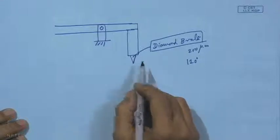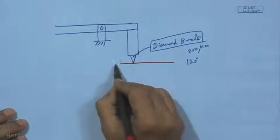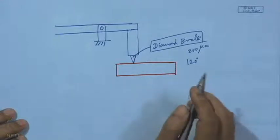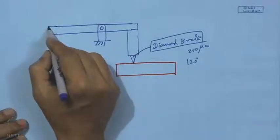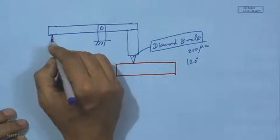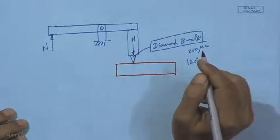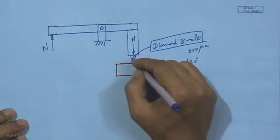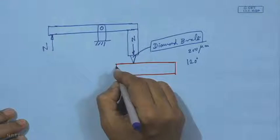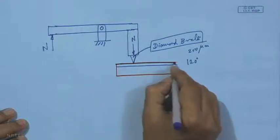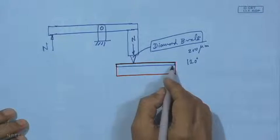In the scratch test apparatus, the coated sample is placed on the table. A normal load is applied, which is transmitted to the indenter through the arm. With this normal load, the indenter makes a deeper scratch into the coating as the table moves — the coated sample moves while the stylus with its indenter penetrates deeper into the coating.